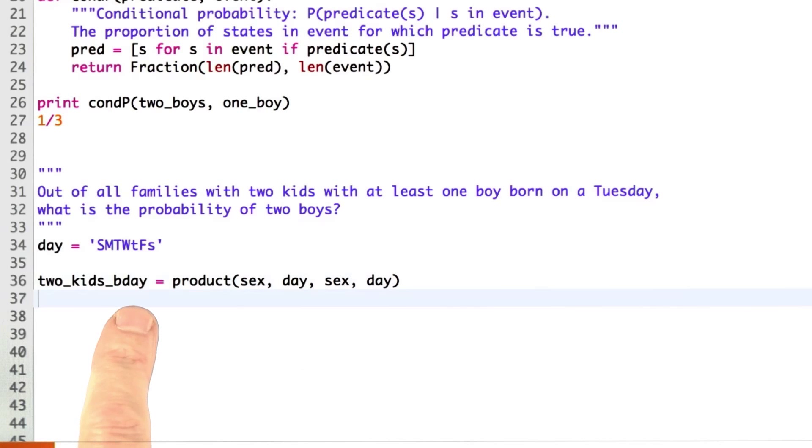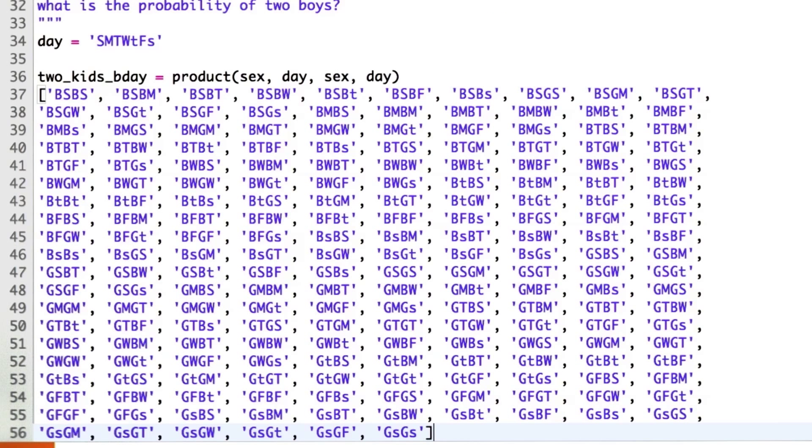A sample space of two kids with their birthdays, one kid with their day of birth, the second kid with their day of birth. What does that look like? Well, it's this huge thing of 2x7x2x7 entries.